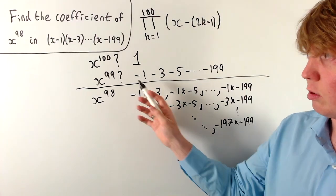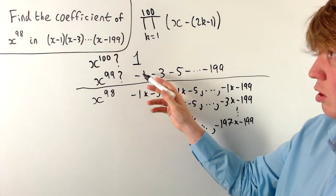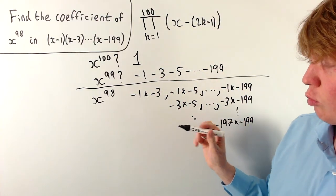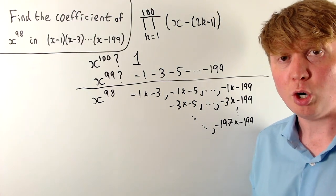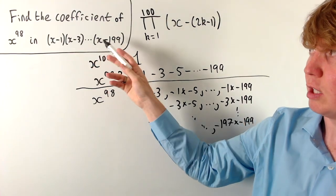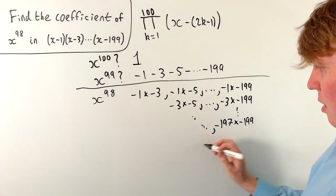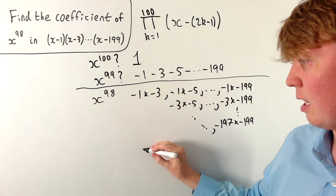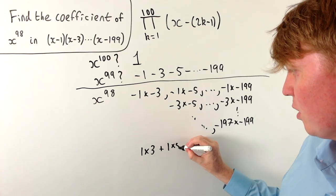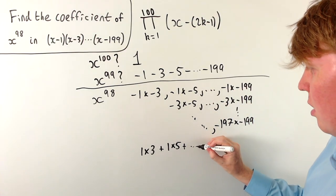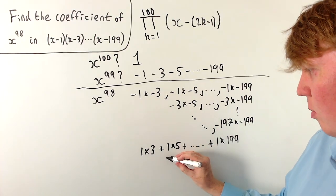You can see similarity with Vieta's formulas here. The coefficient of x^99 is the negative sum of the roots, and the coefficient of x^98 is the sum of all product pairs of the roots. The roots here are 1, 3, 5, up to 199. So we can write our sum without the negatives, since the negatives always cancel in these products.